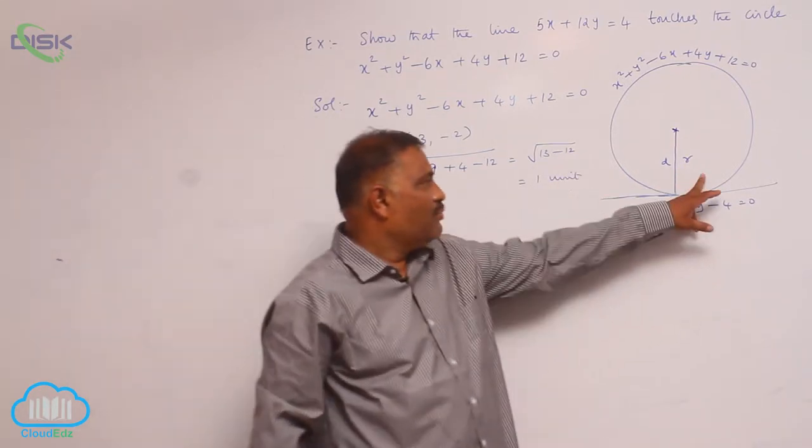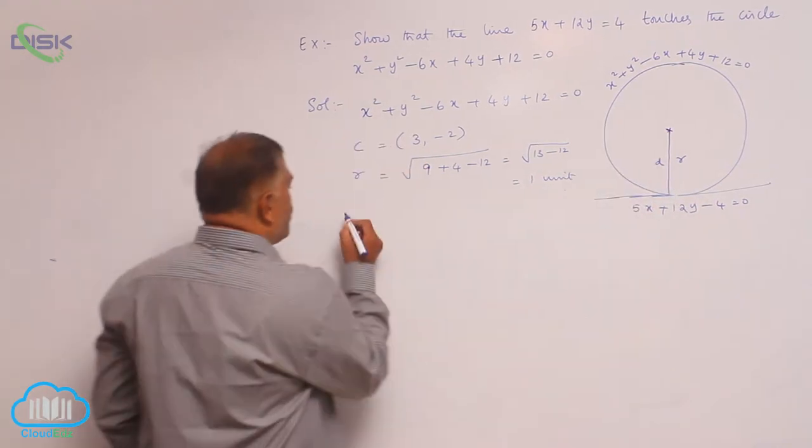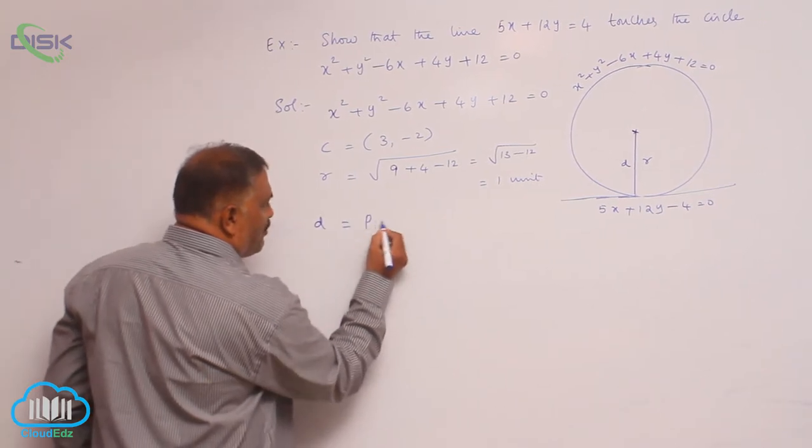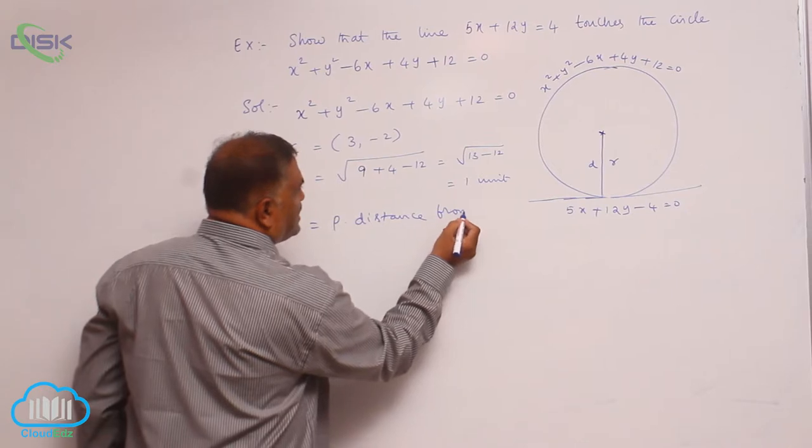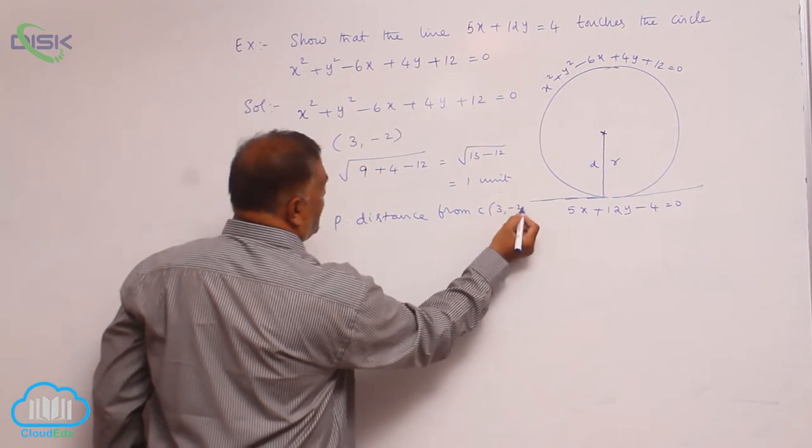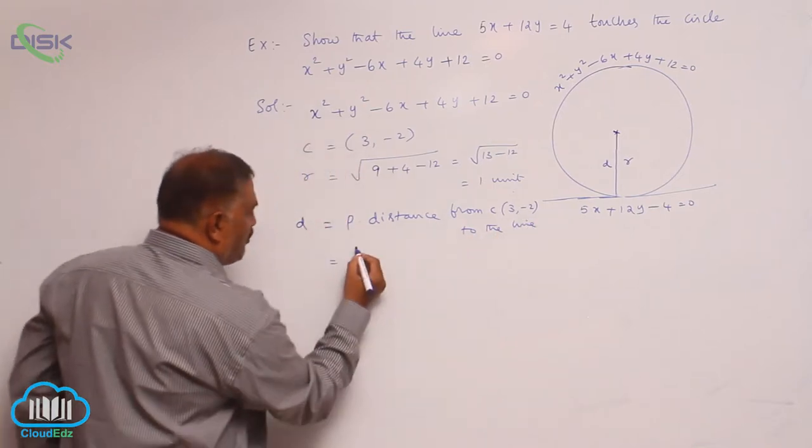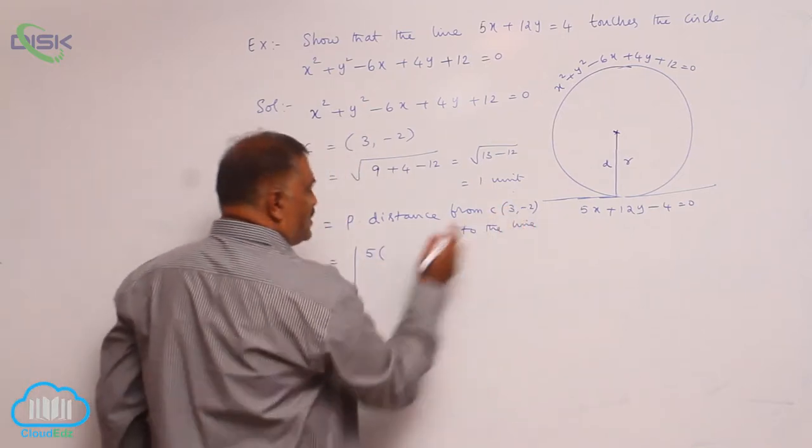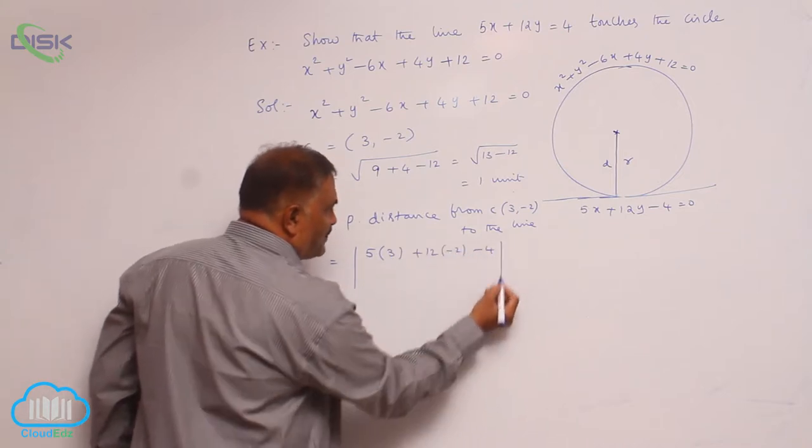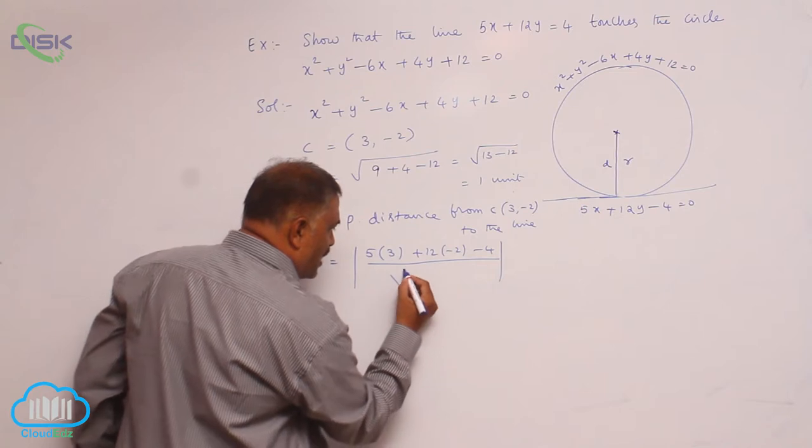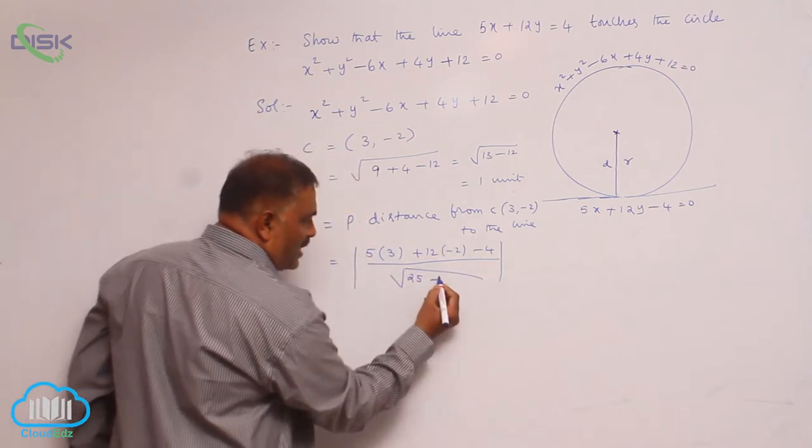Now we found out radius. We need to prove that it is equal to the perpendicular distance from center. So we also consider perpendicular distance from center. What is center here now? 3 comma minus 2 to the line. This is modulus 5 into 3 plus 12 into minus 2 minus 4 divided by square root of a square 25, b square 144.